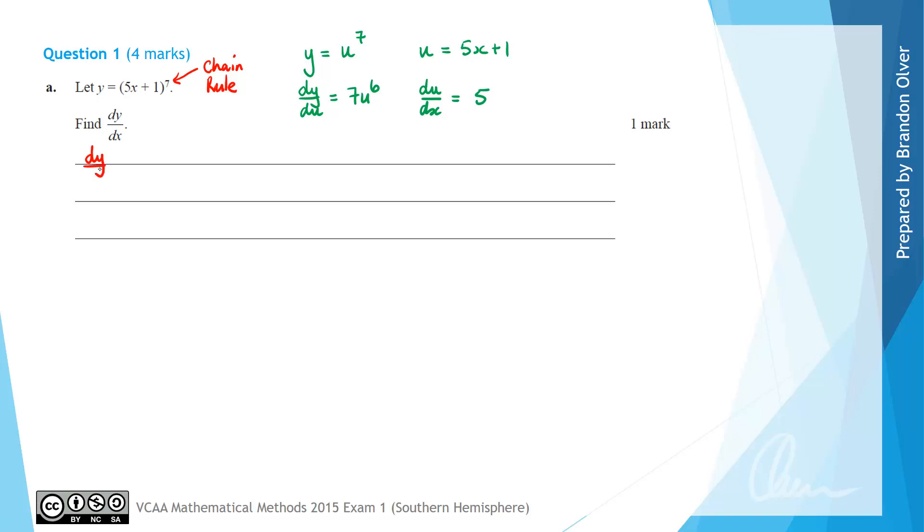From the formula sheet we know that the chain rule which calculates dy/dx is equal to dy/du times du/dx. So therefore dy/dx for this question is going to equal dy/du which is 7u, but u is 5x plus 1 to the power of 6, times du/dx which is 5.